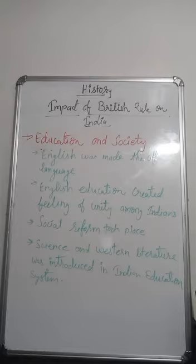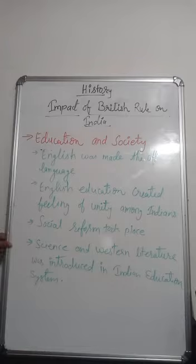Social reforms took place. Sati, child marriage, and human sacrifice were abolished. Widow remarriage was encouraged. Science and western literature were introduced into the Indian education system.